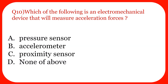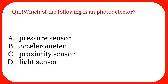Question ten: Which of the following is an electromechanical device that measures acceleration forces? The options are pressure sensor, accelerometer, proximity sensor, and none of the above. Pressure sensor and proximity sensor are not the correct answers. The answer is accelerometer — whenever we are dealing with acceleration forces, we use an accelerometer sensor.